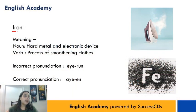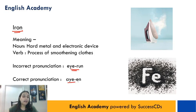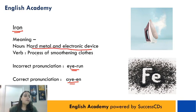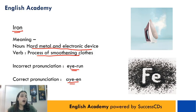The first word is I-R-O-N. Usually log isse pronounce karte hain 'iron', but iski correct pronunciation is 'iron'. Aur iska matlab hota hai hard metal, electronic device, or process of smoothing clothes. To aapki jo istri hoti hai ya jo hard metal hota hai ya jab aap istri karte hain kapdo pe, to hum usse 'iron' bolte hain.